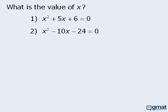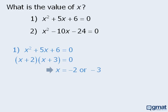Here we want to find the value of x. Statement 1 provides us with a nice quadratic equation involving x. To solve this equation, we will first factor the left-hand side. From here we can see that if x plus 2 times x plus 3 is equal to 0, then x must equal negative 2 or negative 3.